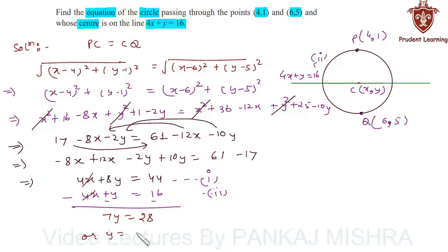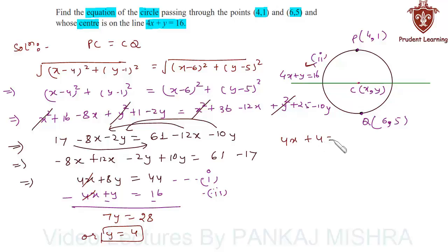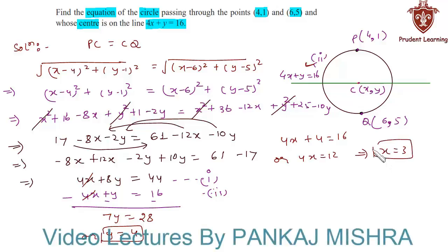So y equals 4. Substituting the value of y into Equation 2, we have 4x plus 4 equals 16, so 4x equals 12, which gives x equals 3. Hence the coordinates of the center are (3, 4).